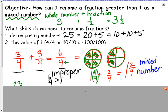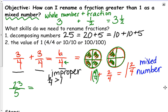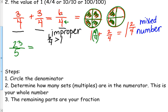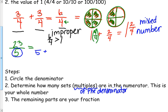We're going to try this same work in a different way. For the number 23 fifths, drawing a lot of pies would take a long time, so there's another way to figure it out — the steps are listed below. First, I circle the denominator, which is 5. Then I determine how many sets or multiples of the denominator are in the numerator. I count by 5s: 5, 10, 15, 20 — and now I only have 3 more, so plus 3.